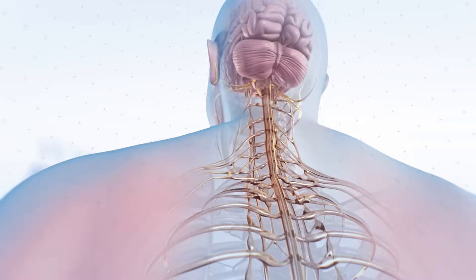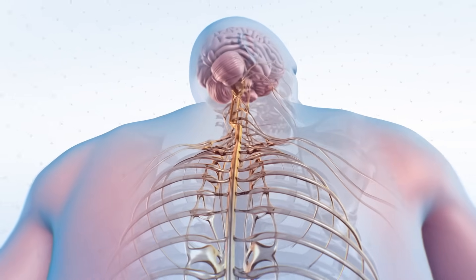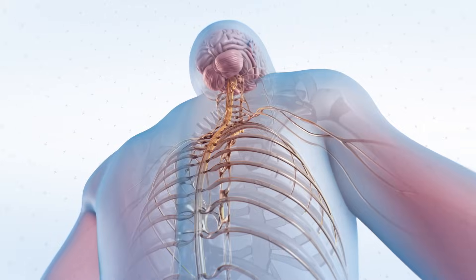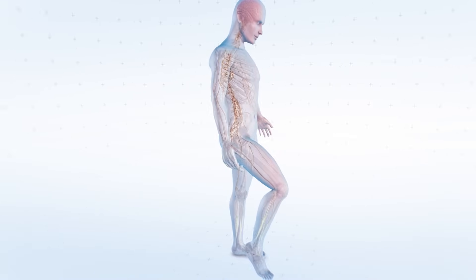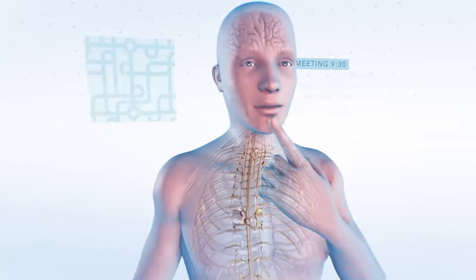Multiple sclerosis is a disease that impacts the brain and spinal cord, which make up the central nervous system that controls everything we do, whether it's taking a physical step or solving a complex problem.